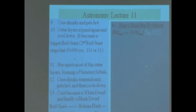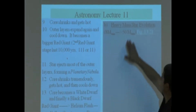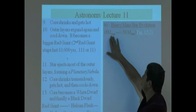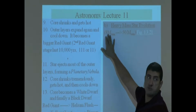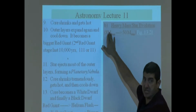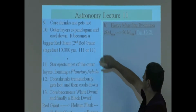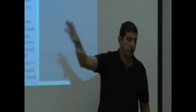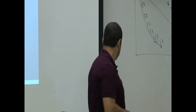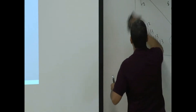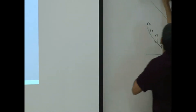Heavy mass star evolution. The heavy masses include anything from about 8 solar masses — heavier than the sun — to almost the super heavy mass, 50 or even 100 solar masses. So let's draw their evolutionary track.